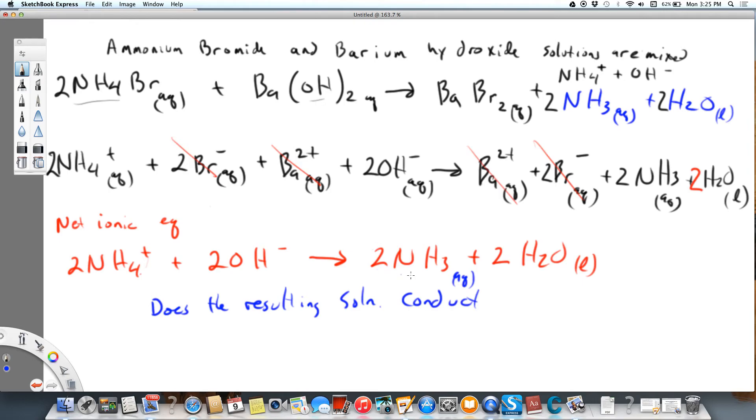But, these ions, even though they're crossed off, they're still in solution. So yes, it conducts strongly, because we have these ions. We've got barium and bromide. We've got a lot of them. And then we have a little bit of NH4 and a little bit of OH, because this is a weak base. There's going to be some ammonium and some hydroxide.